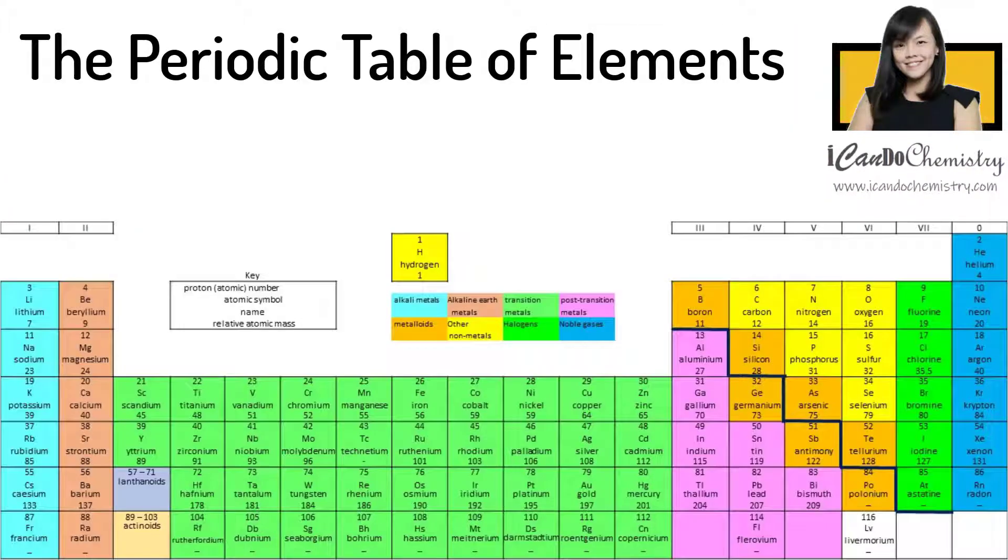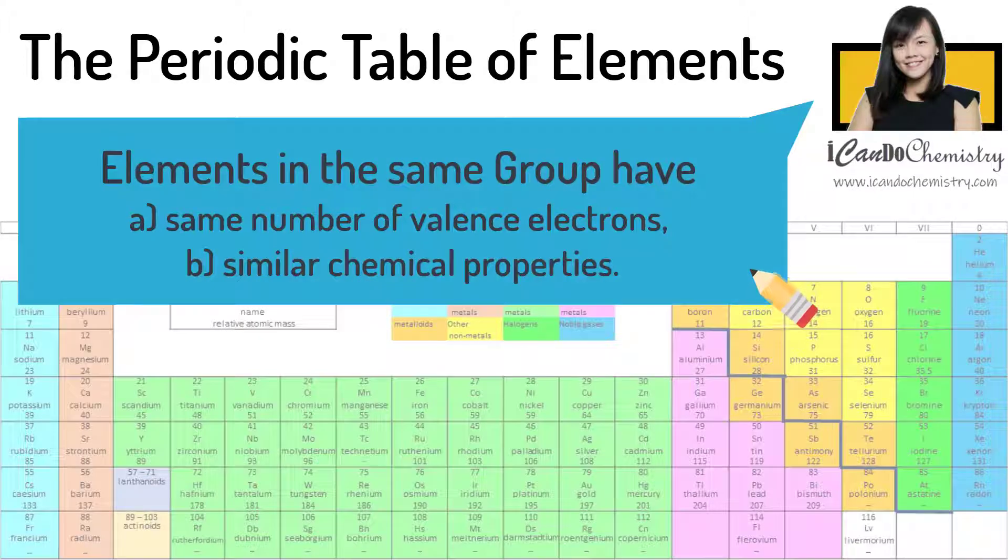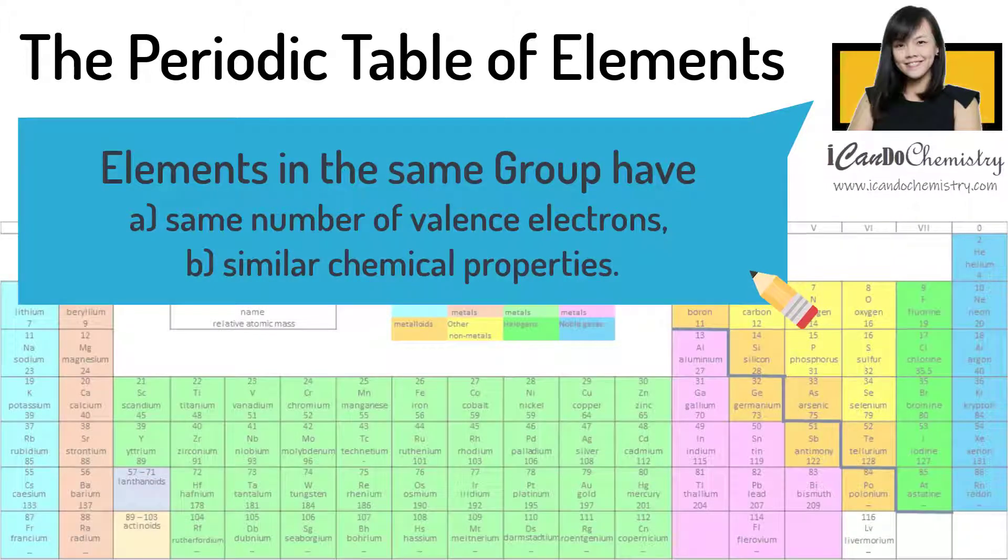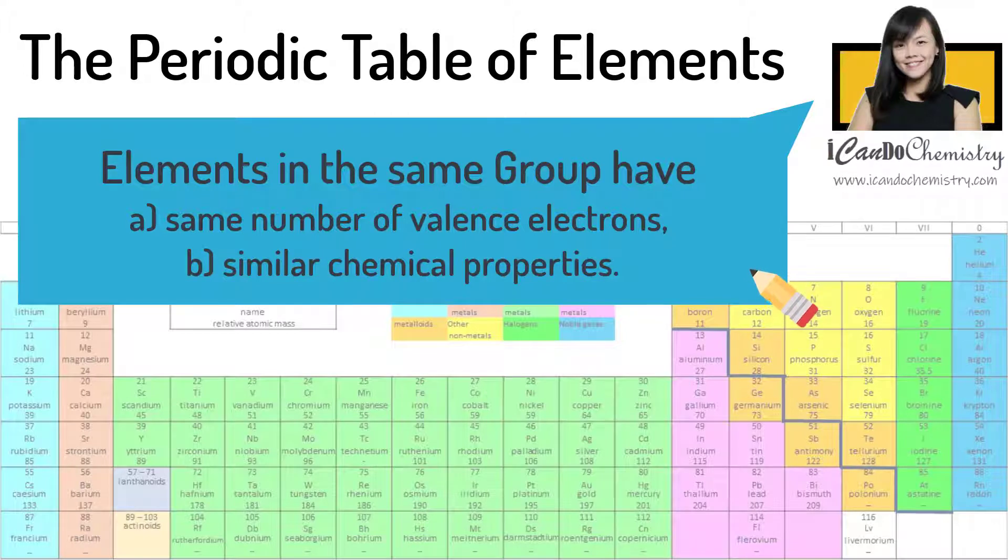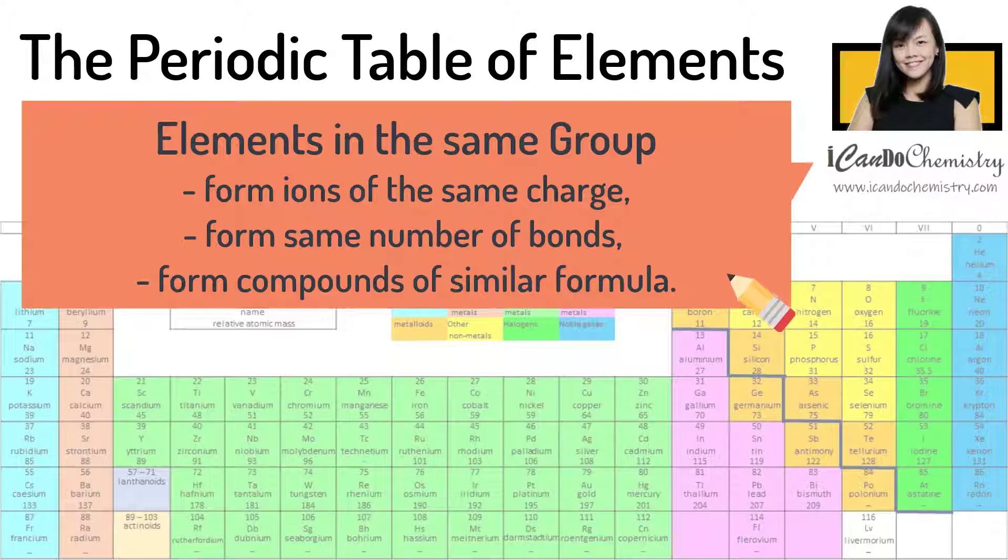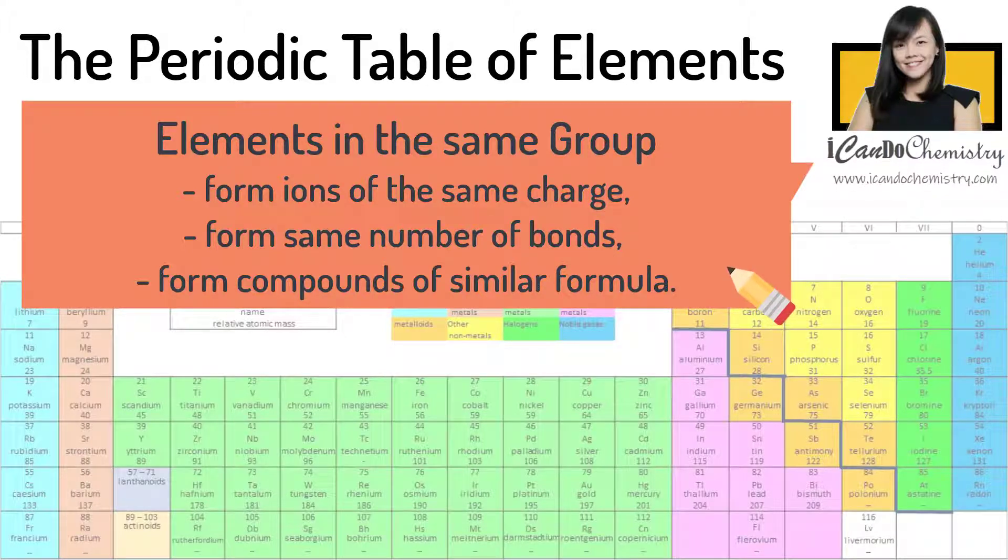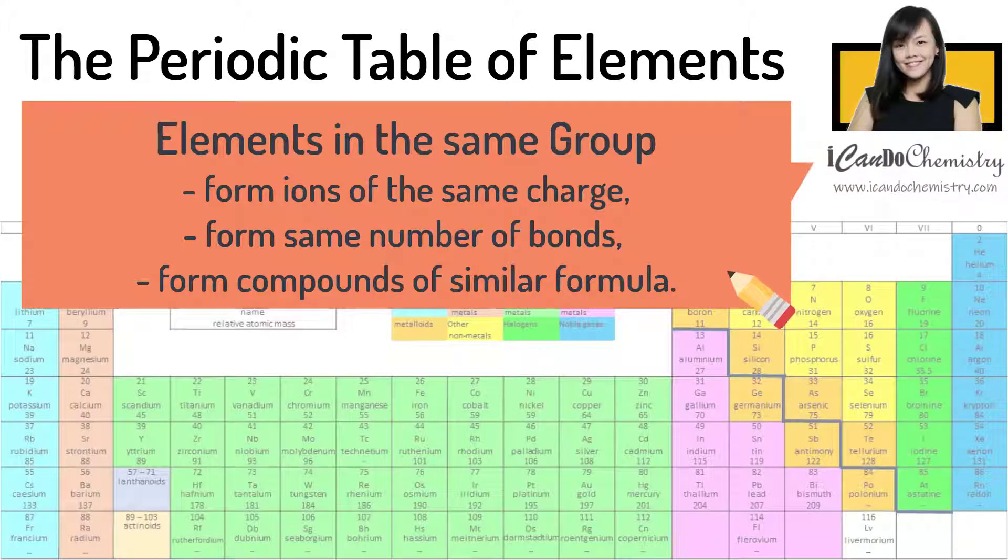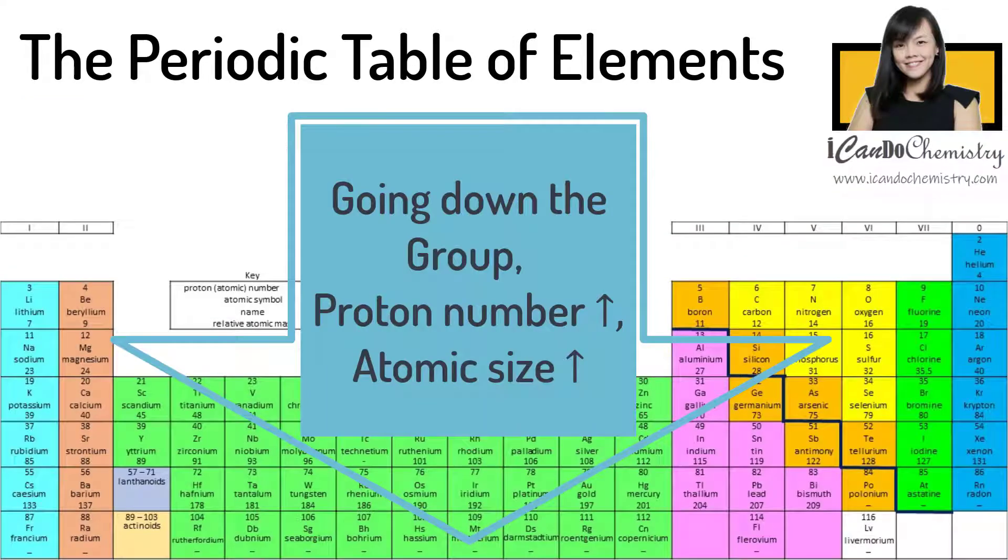So what are the properties that we can conclude about the elements in a group? Elements in the same group, they have the same number of outermost electrons. They tend to resemble one another in their chemical properties. They form ions of the same charge and form the same number of bonds and they form compounds of similar formula. Going down the group, the proton number increases and the atomic size increases.